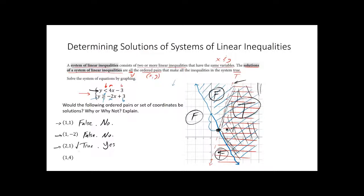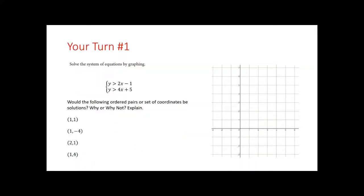1 comma 4. 1 comma 4. It's up here in this blue region right there in the false region. So that is definitely false. That means it is not a solution. So false. It's not a solution. So no. It's only in the blue region. It has to be in both regions for it to be true.